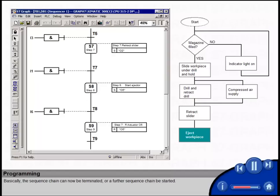Basically the sequence chain can now be terminated, or a further sequence chain be started. In our example, the chain is processed cyclically, meaning another work operation starts in the first step S1 of the sequence chain.